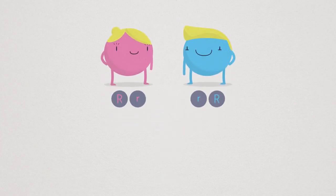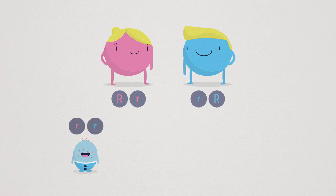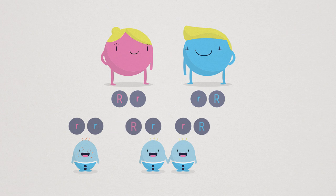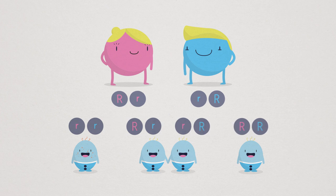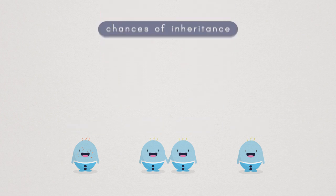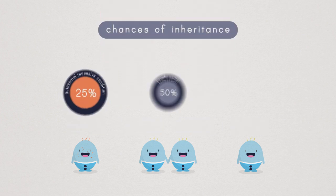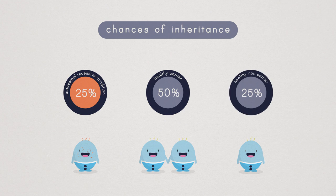When healthy carriers have children, there are three possible outcomes. One, the child inherits both faulty gene copies and has the condition. Two, the child inherits only one faulty gene copy and is a healthy carrier like his or her parents. Three, the child inherits both working copies of the gene. So each time healthy carriers have children, there is a one in four, 25% chance, that their child could inherit both faulty gene copies and develop the condition.